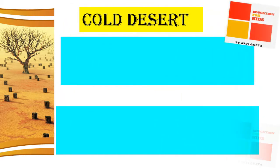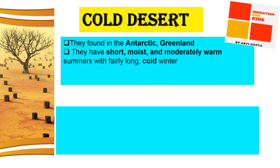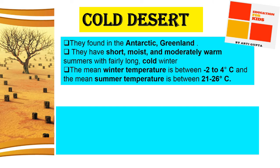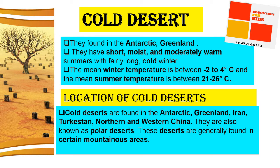Cold deserts are found in Antarctica and Greenland. They have short, moist and moderately warm summers with fairly long, cold winters. The mean winter temperature is between minus 2 to 4 degrees Celsius, and summer temperature is 21 to 26 degrees Celsius. Cold deserts are also found in Iran, Turkestan, and Northern and Western China. They are also known as polar deserts, and are generally found in certain mountainous areas.